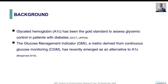With the revolution of continuous glucose monitoring, a new metric has emerged and was called initially estimated A1C, then glucose management indicator, or GMI. This metric has been widely used over the past five years, not only by clinicians, but also by patients whenever they are looking at their glycemic control.